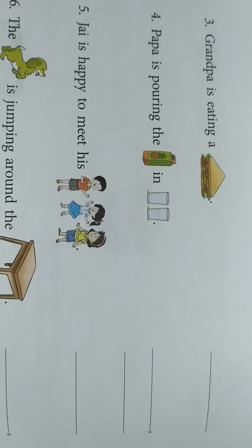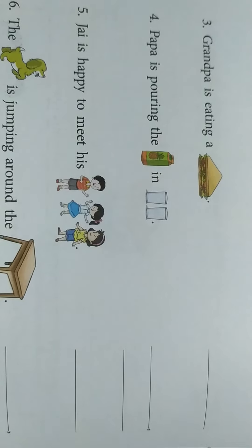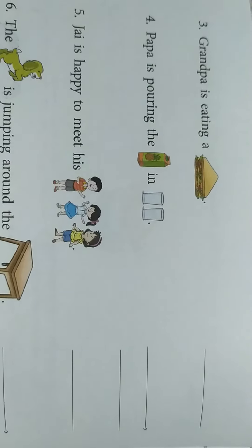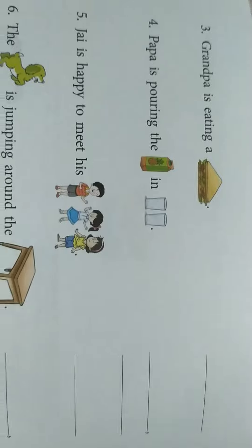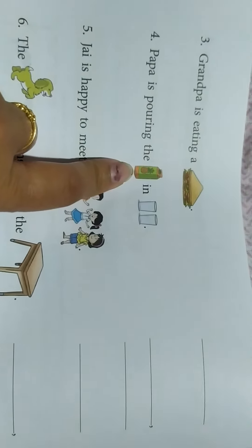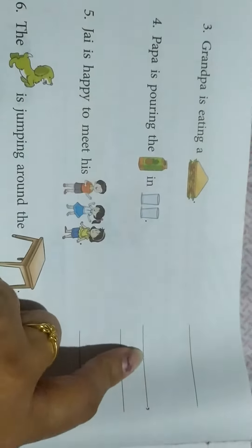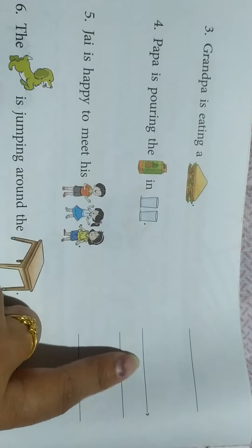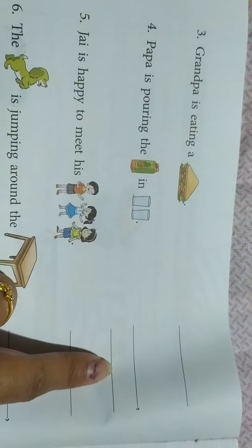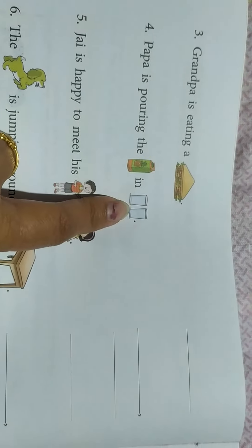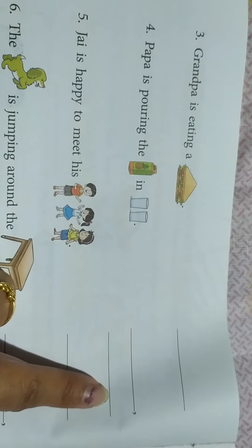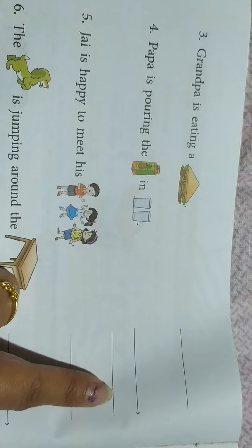Number 4. Papa is pouring the dash in dash. It is a picture of a juice bottle. So you have to write in the first blank, juice. Papa is pouring the juice in... here you have to write glasses. Here we are having 2 glasses. So you have to write glasses. G-L-A-S-S-E-S.